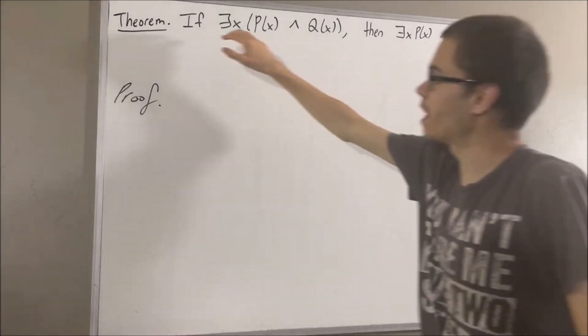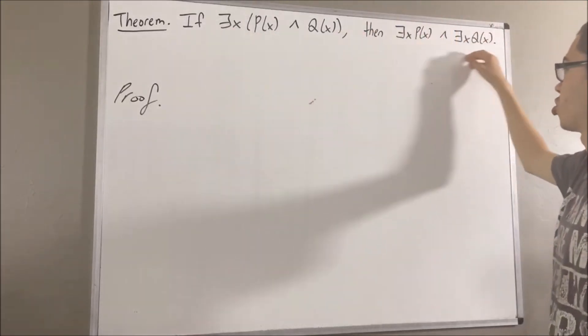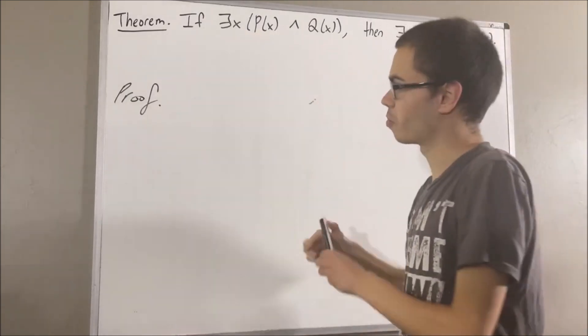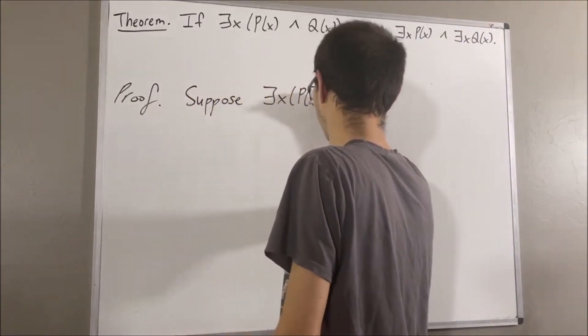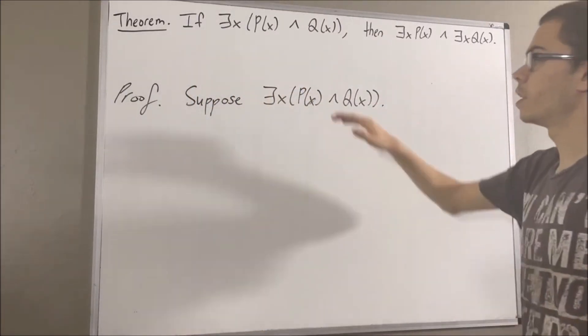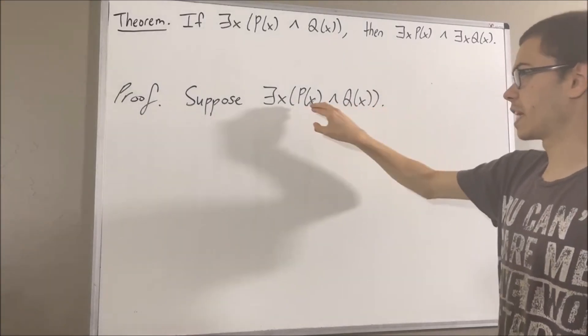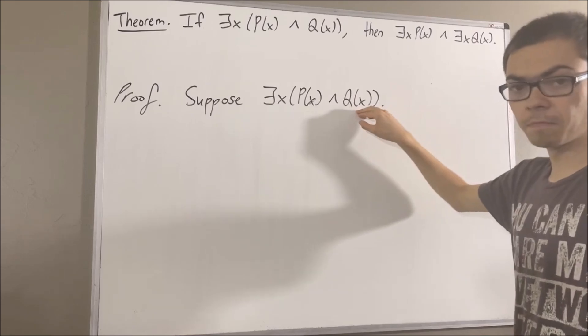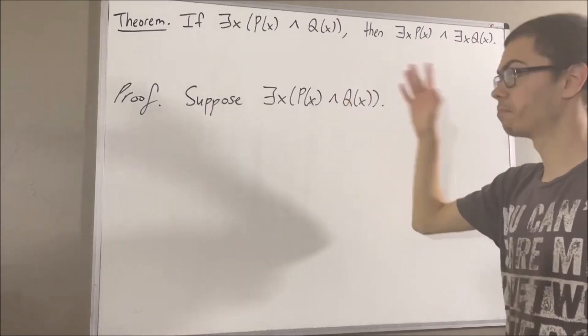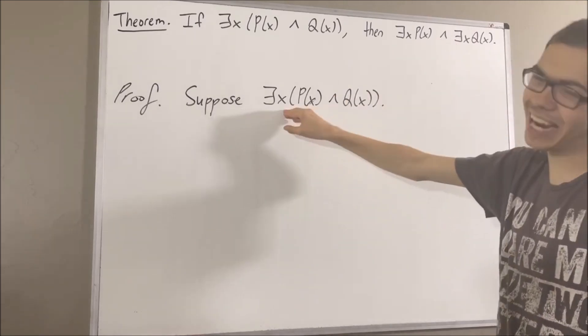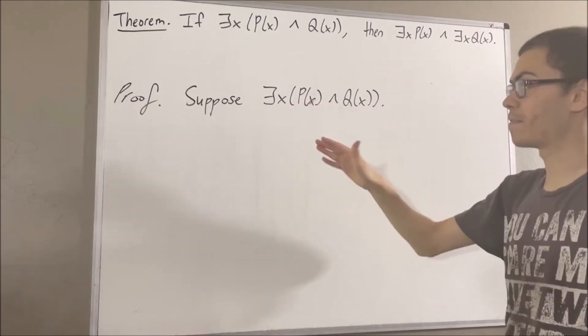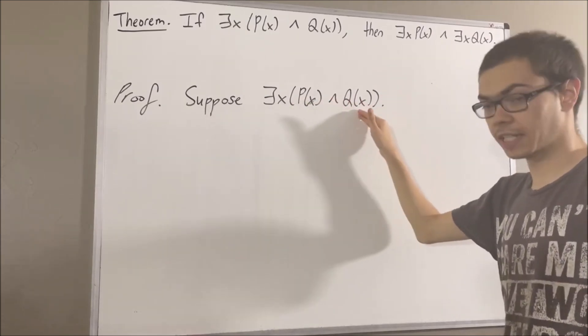Now we're trying to prove if this is true, then this is true. So let's suppose that this is true. This means that there is at least one object out there which satisfies this statement. We'll call that object c. So we're going to instantiate x to be c. So we have that p of c and q of c is true.